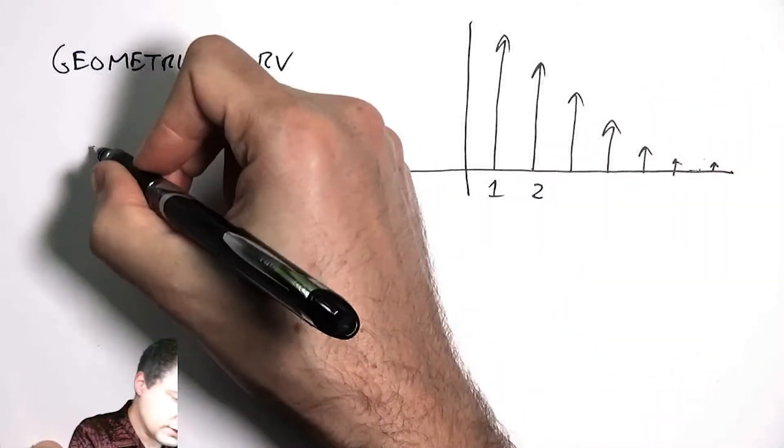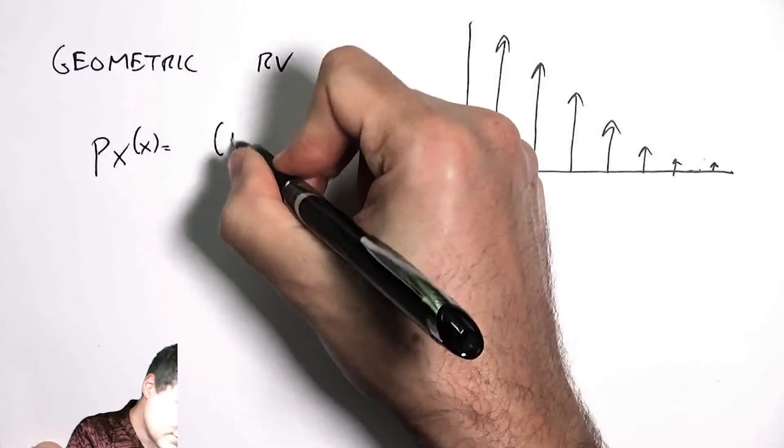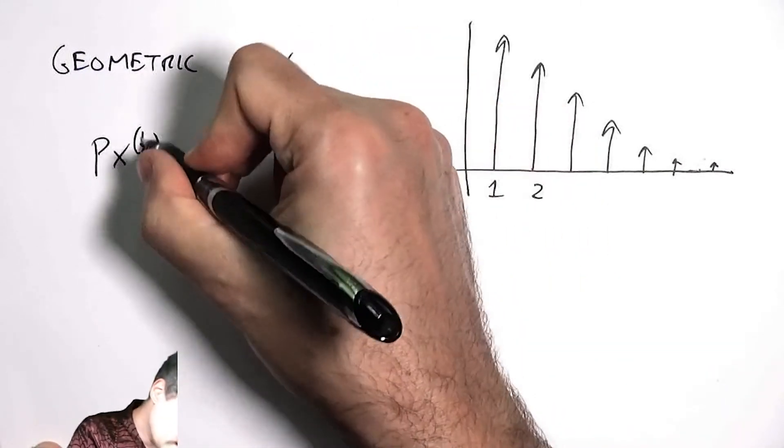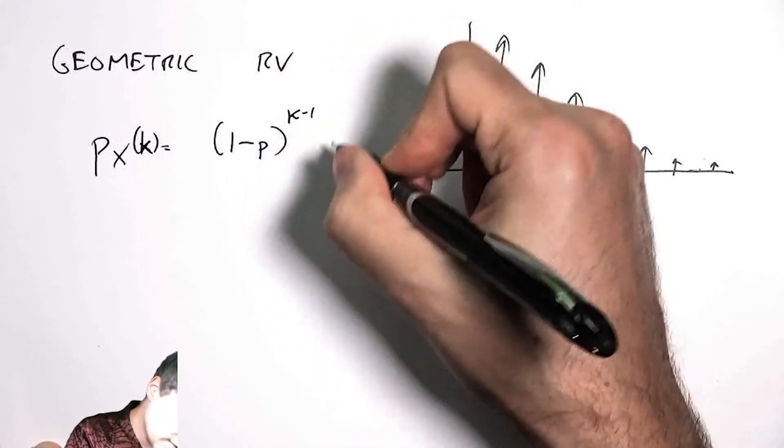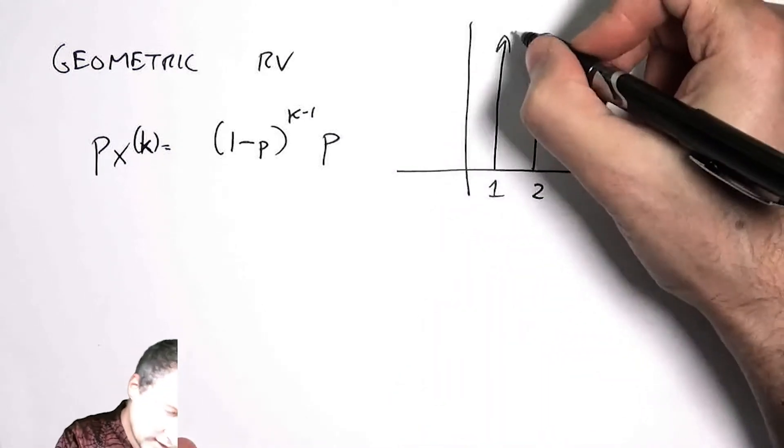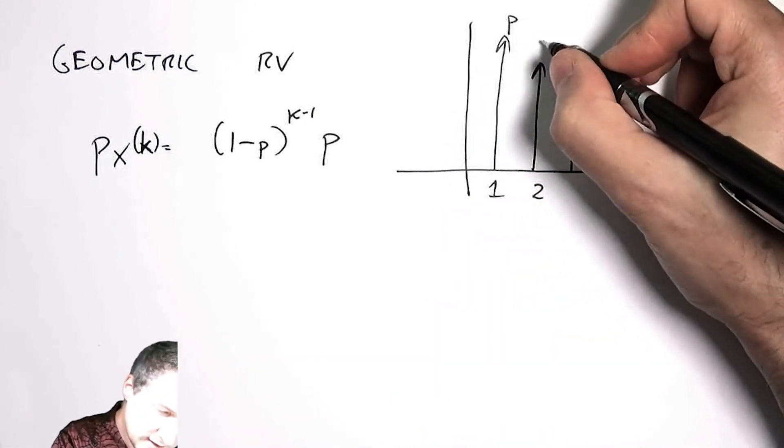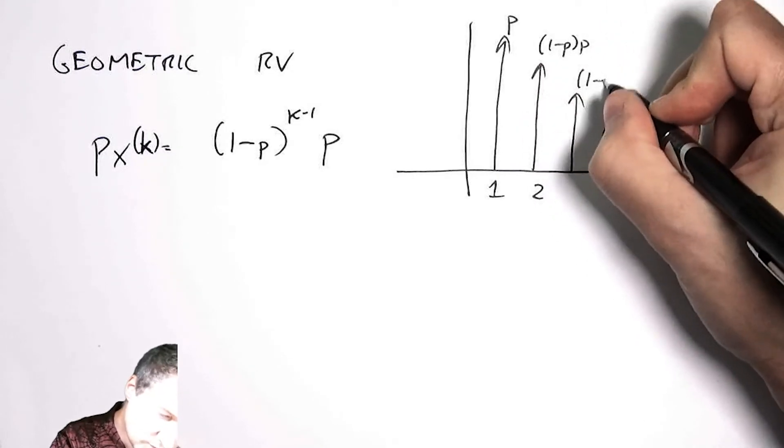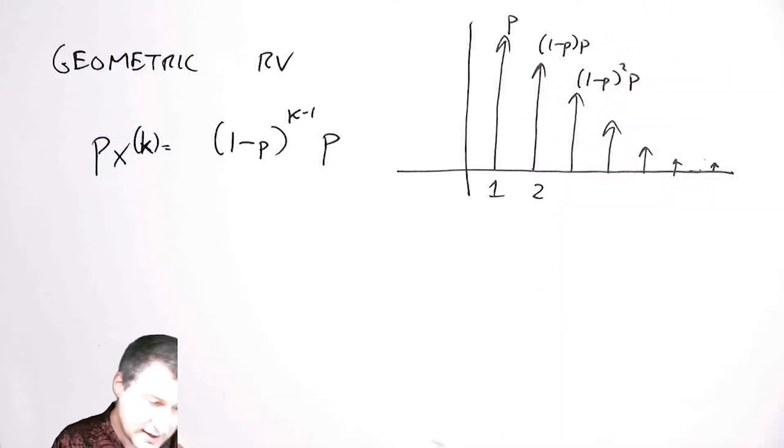And so here, recall the PMF is (1-p)^(k-1) times p—failing k minus one times and then succeeding once. So the heights of these arrows: this is p, this is like (1-p) times p, this is (1-p)^2 times p.